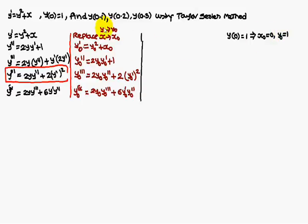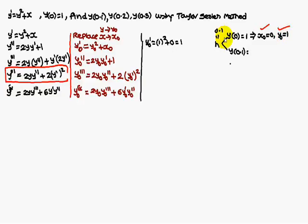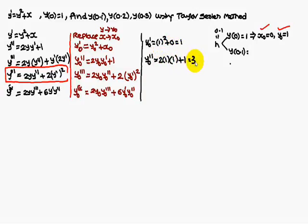Given y(0) equals 1, what this means is x naught equals 0 and y naught equals 1. We have to find y(0.1), so from 0 to 0.1, h equals 0.1. Substituting: x naught is 0, y naught is 1. y naught dash: y naught is 1, 1 squared plus 0 equals 1. y naught double dash: 2 into y naught into y naught dash equals 2·1·1 plus 1, giving y naught double dash equals 3. y naught triple dash: y naught is 1, y naught double dash is 3, y naught dash is 1; simplifying gives 8. Fourth differentiation gives 34.